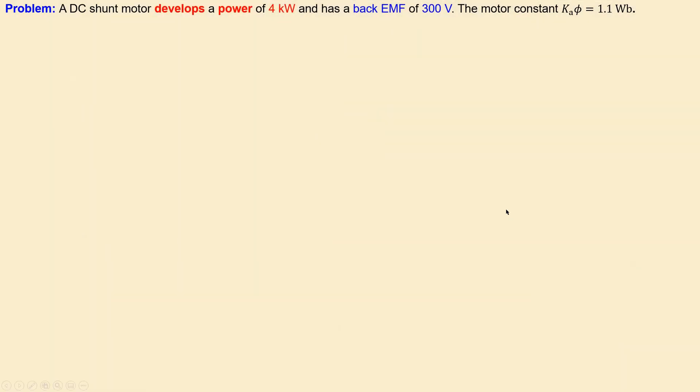We have a DC shunt motor and it develops a power of four kilowatts and it also has a back EMF of 300 volts. In addition we know that the motor constant is 1.1 weber, so that is the information we have given.